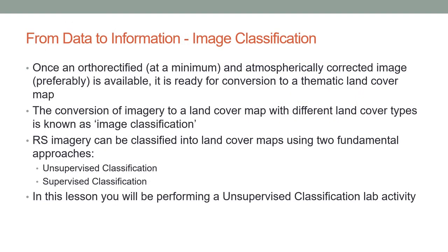Once a multispectral image has gone through preprocessing — at minimum an orthorectified image, and preferably an atmospherically corrected image with surface reflectance — it is ready for conversion to a thematic land cover map. The conversion of imagery to a land cover map with different land cover types is known as image classification. In Lesson 2 towards the end, we will start focusing on image classification, which will be a theme for the rest of the course. Remotely sensed imagery can be classified into land cover maps using two fundamental approaches: unsupervised classification and supervised classification. In this lesson, you will be performing an unsupervised classification lab activity.